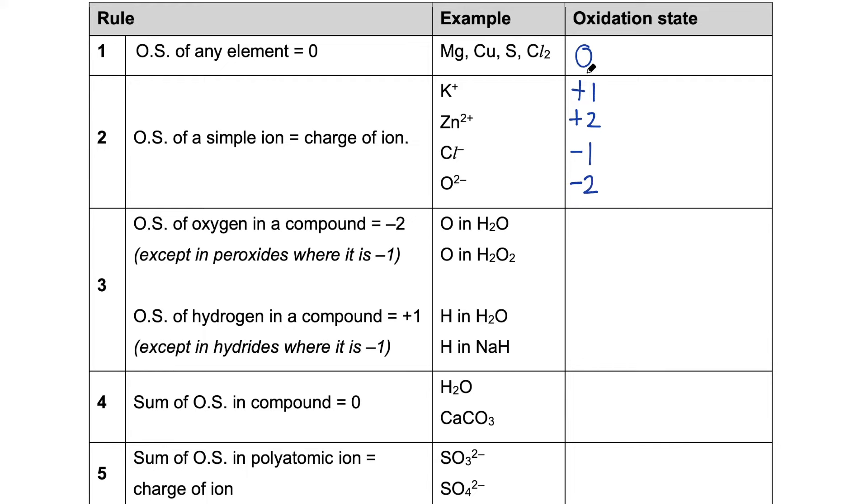An important point to note is that the sign for oxidation state always comes in front, and the number must be there. So even though Cl minus, we don't write Cl one minus, in the oxidation state, it must be minus one. You cannot just write minus.